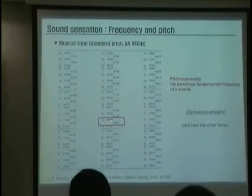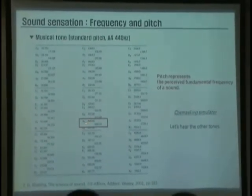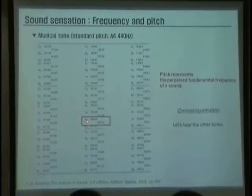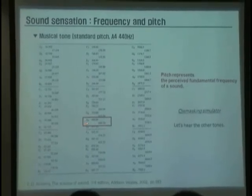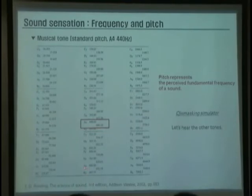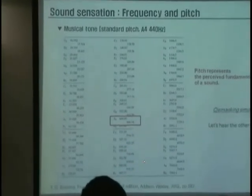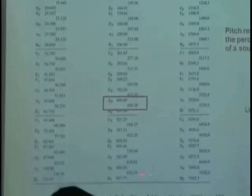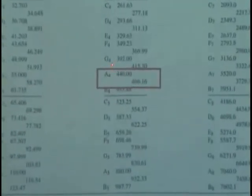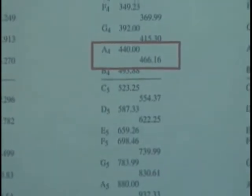As you can see over here, the A4 is 440 hertz. And A5, that is one octave above, is exactly twice of the A4. A3 is 220 hertz.